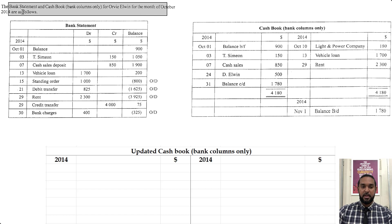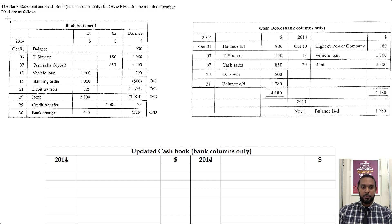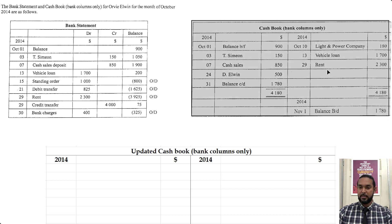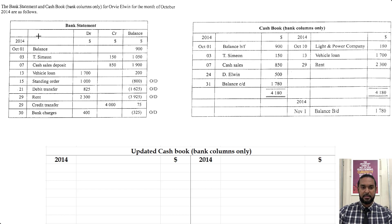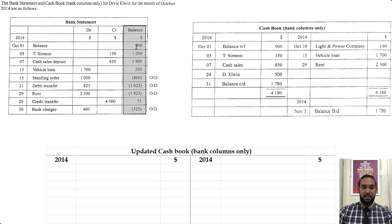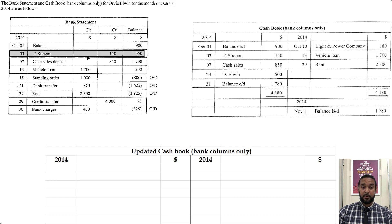So as per usual let's take a read of the information. It says the bank statement and cash book bank columns only for Orvi Elwyn for the month of October 2014 are as follows. On this side we have the bank statement and across here we have the cash book bank columns only. The debit column represents payments or outflows from the bank statement, the credit column represents inflows, and the balance column is updated after every transaction. The balance at the start of the month was 900.